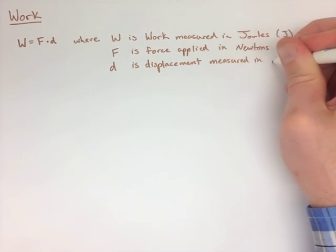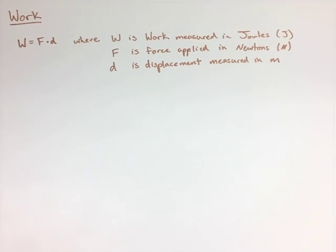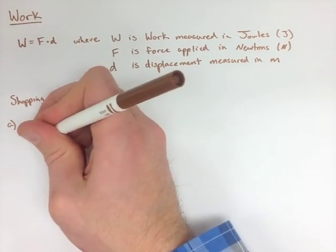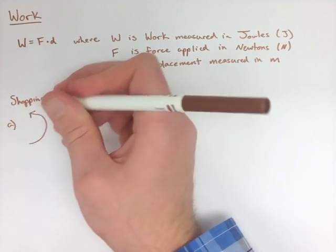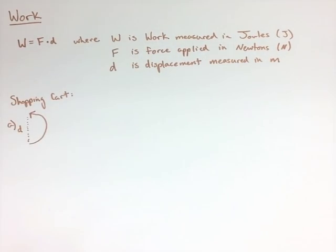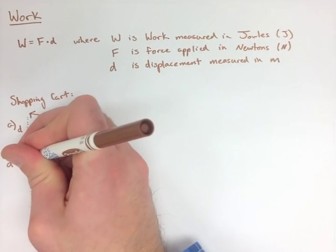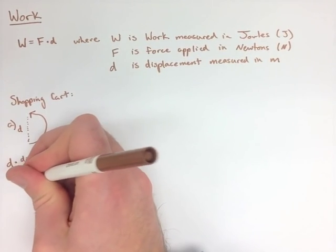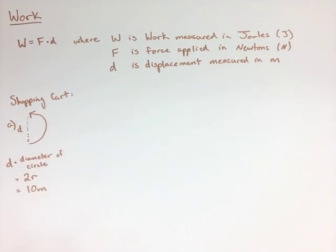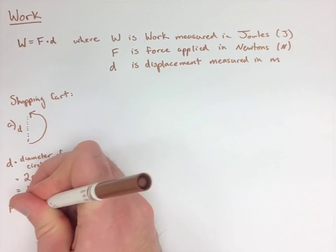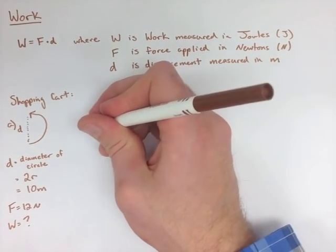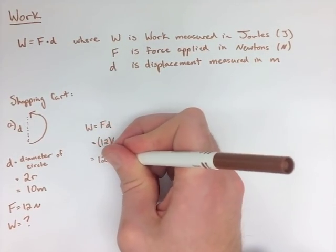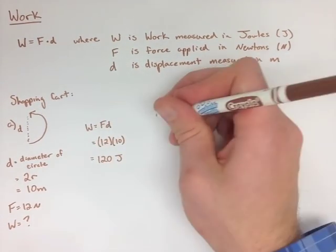Now it's very important to remember that work is force times displacement, not distance. If we look at this shopping cart example where we have a person pushing a shopping cart around in a circle, in the first example we're going halfway around the circle. We're going to find our distance to be the diameter of the circle. The circle has a radius of 5 meters, so we do 2 times r, and our diameter is 10 meters. Our force was 12 newtons, so when we calculate our work, we get 120 joules.